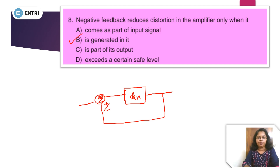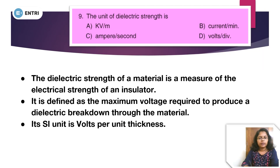Question number 9: The unit of dielectric strength. The options are: Option A — KV per meter, Option B — current per minute, Option C — ampere per second, Option D — volt per division.